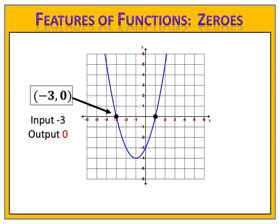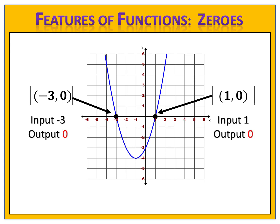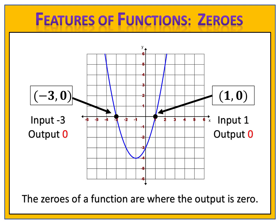Consider the second point: one, zero. That tells us we have an input of one and an output of zero. The zeros of a function are where the output is zero, and they're always located on the x-axis.